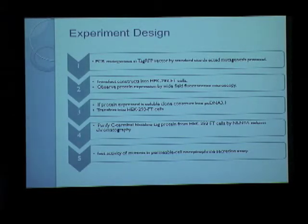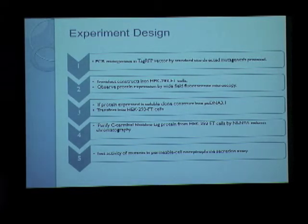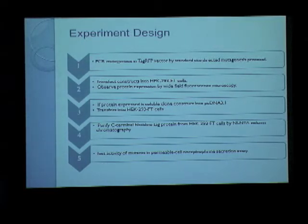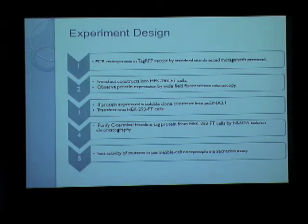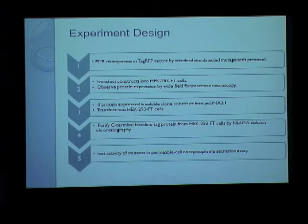The experimental design adopted involves first constructing mutants of the CAPS protein and cloning them into a red fluorescent protein vector tag RFP by standard site-directed mutagenesis protocols, followed by transfecting these constructs into HEK-293-FT cells and observing protein expression by fluorescence microscopy. Subject to the proteins not aggregating, we would clone them into a construct appending a C-terminal hexahistidine tag, transfect into HEK cells, purify proteins using nickel-NTA column chromatography, and test their activity in a permeable cell neuropeptide Y secretion assay.